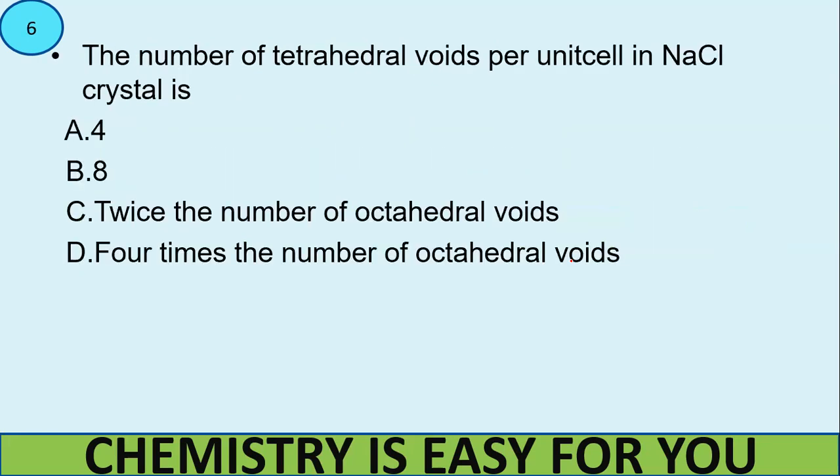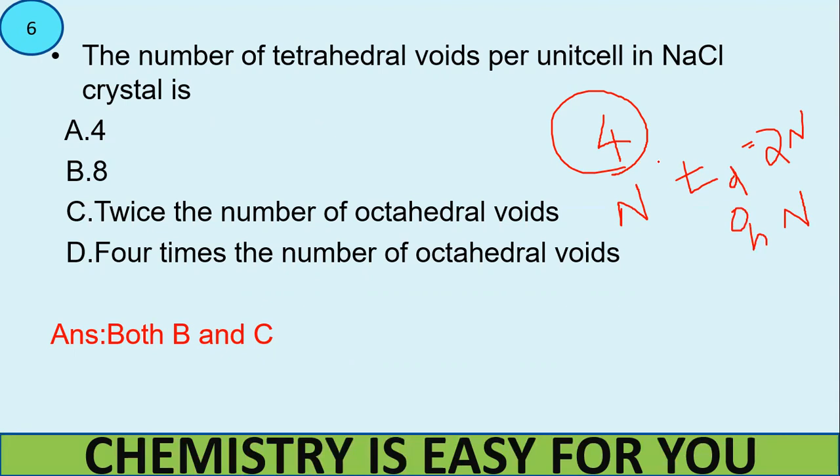Now let's move on to the next question. The number of tetrahedral voids per unit cell in NaCl crystal is? So first of all the answer is both B and C. In NaCl crystals the total number of atoms present is 4. In NaCl per unit cell there are 4 atoms. So I have already said that if there are N number of atoms the total number of tetrahedral voids will be equal to 2N and the total number of octahedral voids will be N. So here since the total number of atoms is 4, the total number of tetrahedral voids should be 2 into 4 which is equal to 8. So B is a correct answer and also the number of octahedral voids is 4, and therefore 8 is twice the number of 4, and therefore we could also write twice the number of octahedral voids. So both B and C are the correct answer for this particular question.